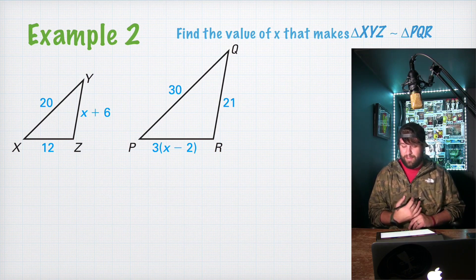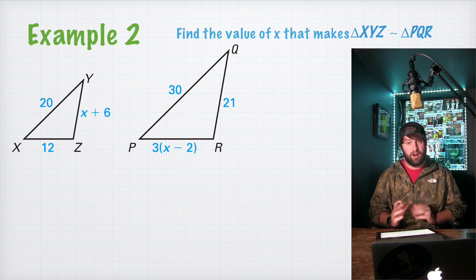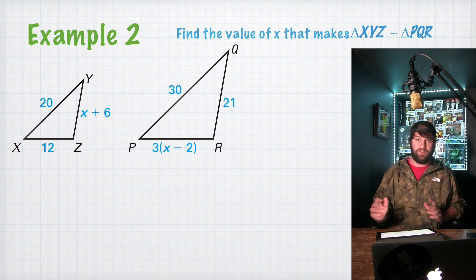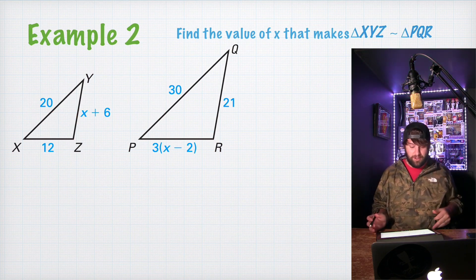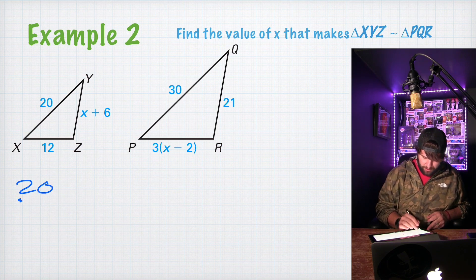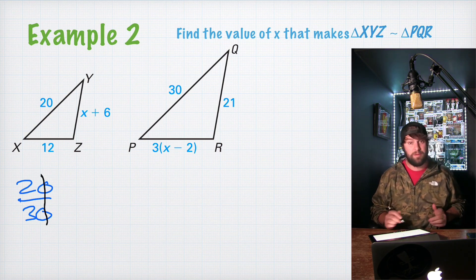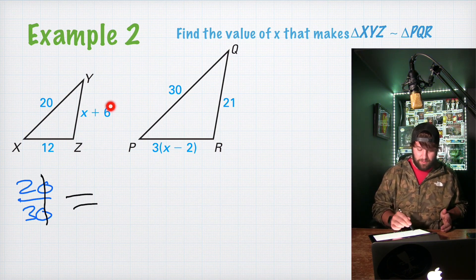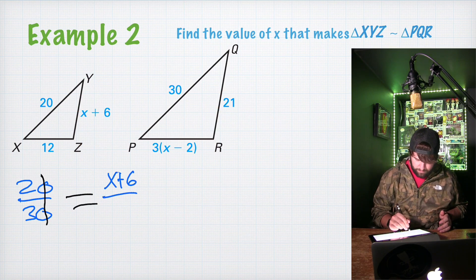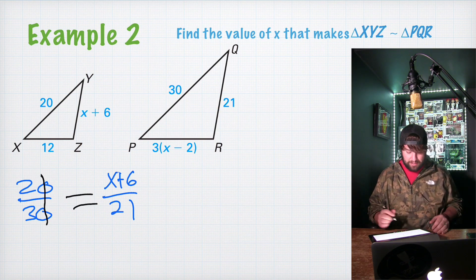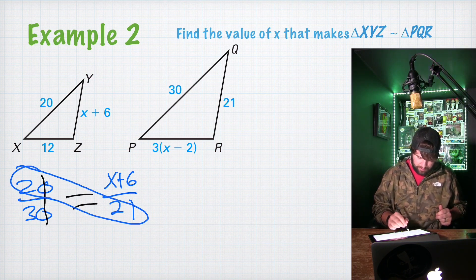Example 2. Find the value of X that makes triangle XYZ similar to triangle PQR. So to start off, I'm going to say it'll make it a lot easier to solve this if you pick a pair of sides that have no variables to find your scale factor. So we're going to start with 20 over 30. I'd like to point out those zeros can cancel out just to be 2 over 3. And we're going to set it equal to, and I'll pick a side with the variable, X plus 6 over 21. Because those are the corresponding sides. So if we work this out, we're going to do our cross product.